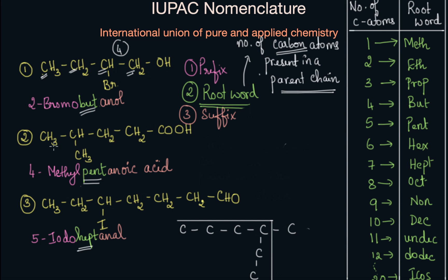Similarly, let's check the second example. We have one, two, three — that's a short chain. But if we count here, one, two, three, four, five. Remember, it has to always be a chain. We have to count the total number of carbon atoms in the parent chain — the longest chain. So the parent chain has five carbon atoms. The root word used for five is pent, and therefore we have pent here.